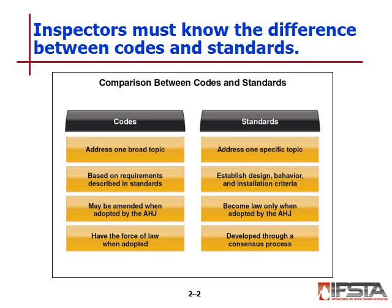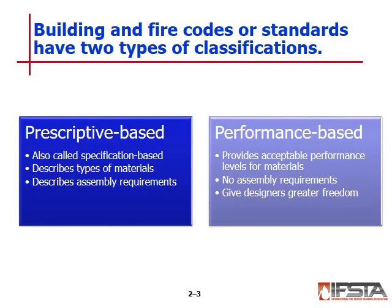Codes are legal documents that govern activities at various levels of government. Before the creation of standardized model codes, jurisdictions developed their own codes, which led to a wide variety of acceptable minimum levels of safety and some confusion among manufacturers and contractors who sold materials in multiple jurisdictions. Central organizations were needed to write consensus or model codes that could be applied universally.